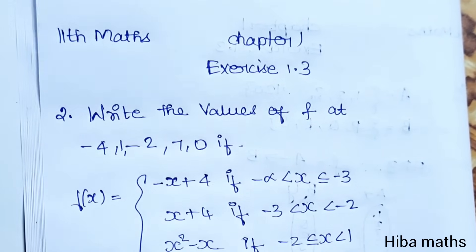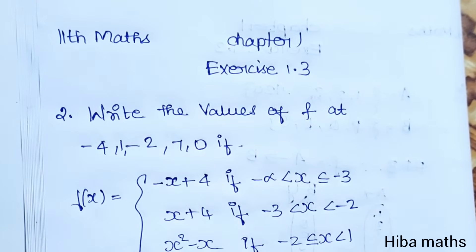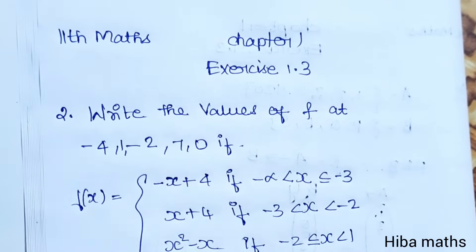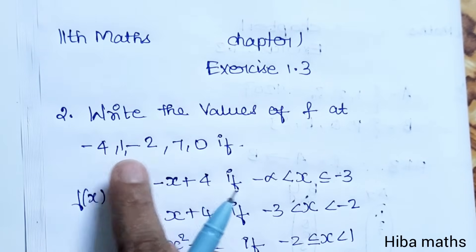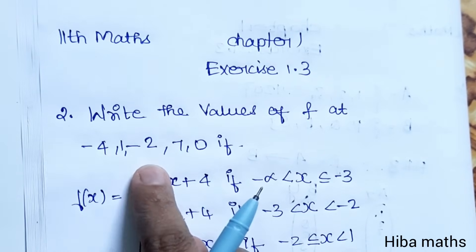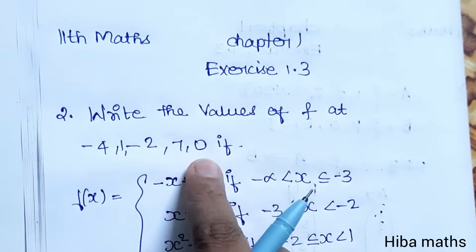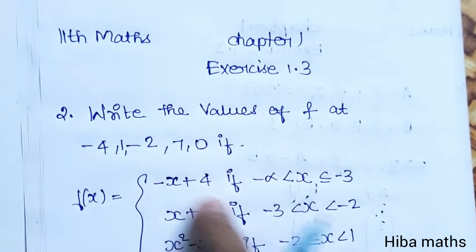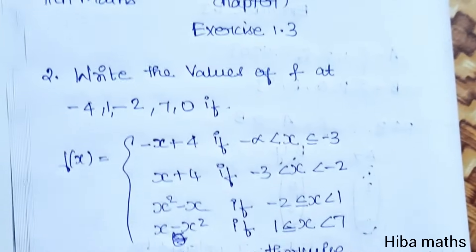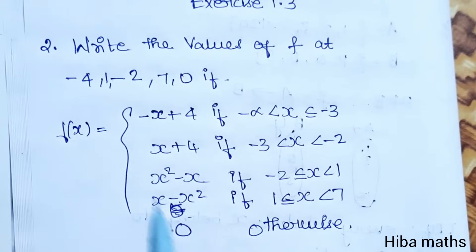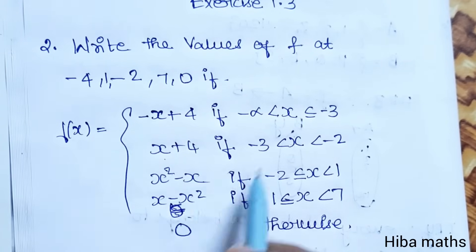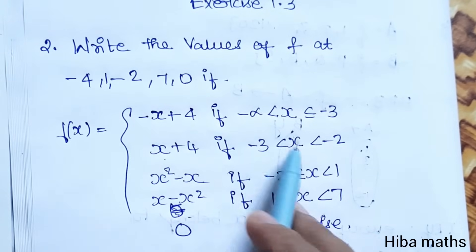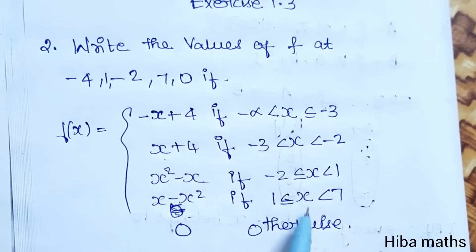Second question: write the values of f at minus 4, 1, minus 2, 7, and 0, given the piecewise function f of x with conditions.